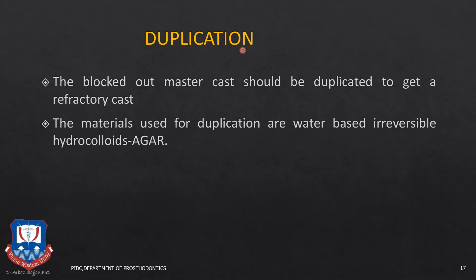This is followed by duplication. The whole purpose of duplication is to create a refractory cast on which the final waxing of the CPD framework will be done. You cannot do the CPD wax up on the regular master cast because it is made up of gypsum type 4 or type 5 material, so it will completely burn out during the burnout or casting procedure. You need a refractory material that can withstand the high temperatures of burnout and casting. Duplication is usually done with a hydrocolloid impression material like agar agar.